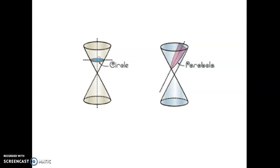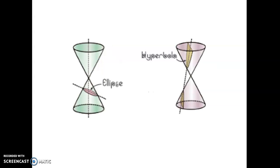If we cut slices out of the conic sections, we get different shapes. If you cut straight across, you get a circle. If you cut it at an angle that goes through the top or the bottom of the conic section and out the side, it's a parabola. If you cut at an angle that goes out each side of one of the cones, it's an ellipse. A hyperbola is like a double parabola — it goes through the top and the bottom of the cone and out the sides. We're going to see all four of these, but we're going to start with parabolas.